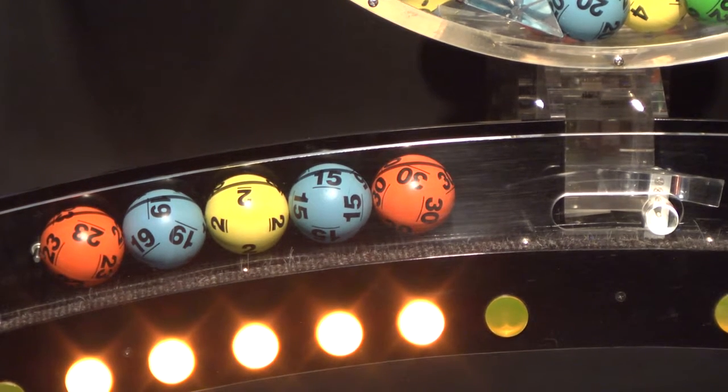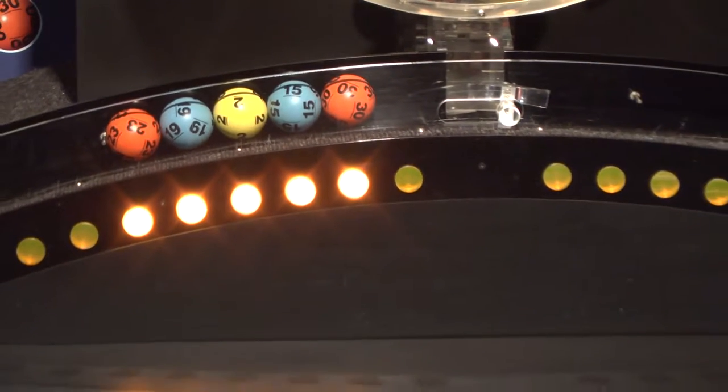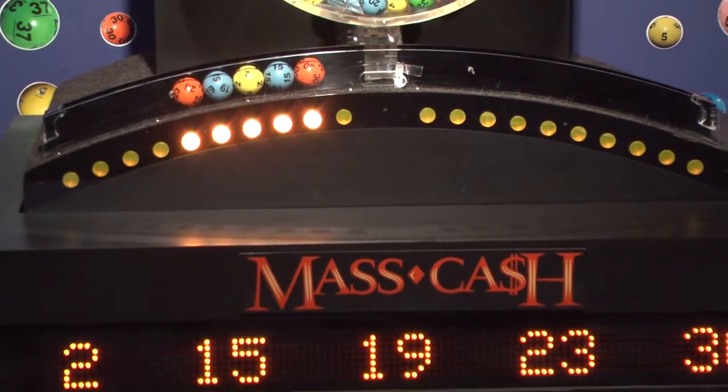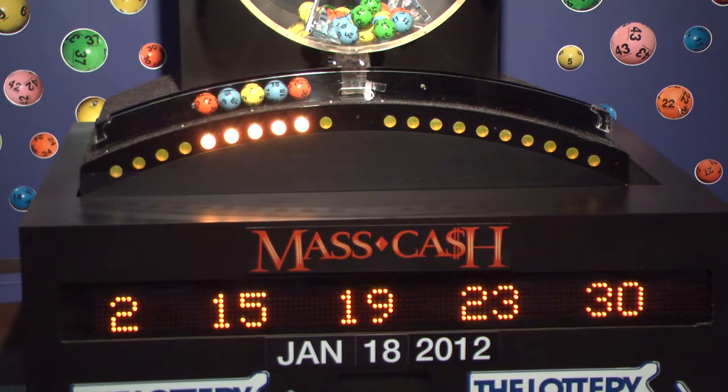Once again the winning Mass Cash numbers for Wednesday, January 18, 2012 are 2, 15, 19, 23, 30. Remember to log on to MassLottery.com to watch all of the Mass State Lottery's drawings.